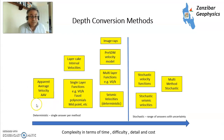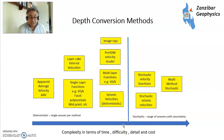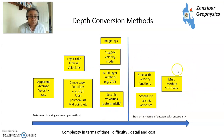There are different depth conversion methods — I run a course on depth conversion which I can explain in a lot more detail. Basically you have two types: deterministic methods, which range in complexity from basic average velocities through V0K functions, multi-layer functions, seismic velocities, and pre-stack depth migration velocity models; or you can go stochastic, which is where you run a whole multiplicity of different cases around one method — and that's what I'll be talking about mostly today.